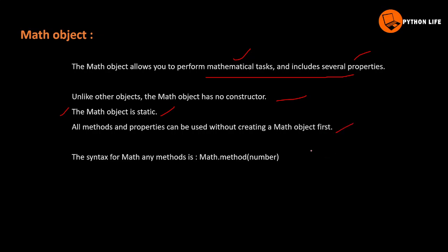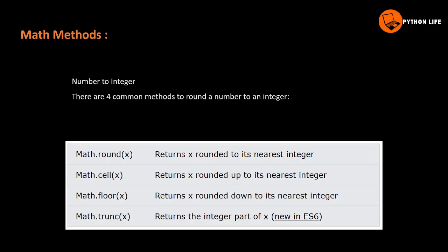All methods and properties can be used without creating a Math object first. The syntax for any Math method is Math dot method name, and inside the parentheses we can pass numbers or values. There are several Math methods available.